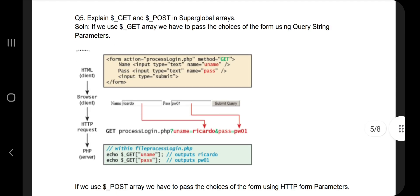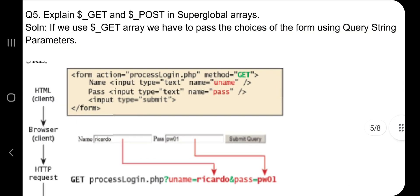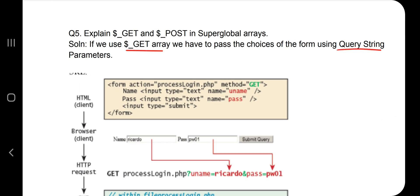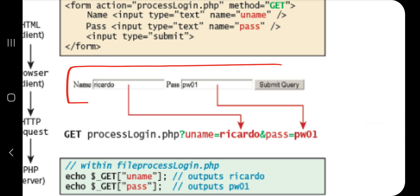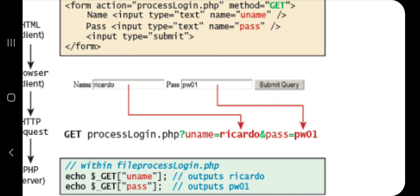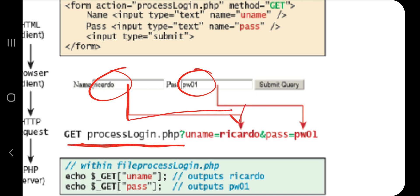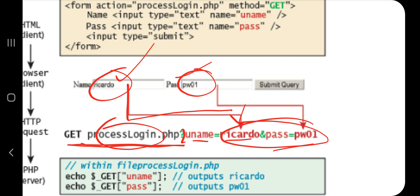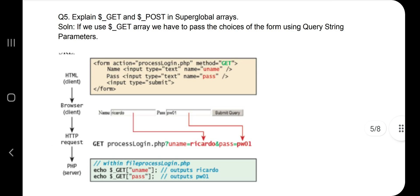The fifth question is about GET and POST superglobal arrays. A superglobal array is accessible to the whole code. GET uses query strings — when you submit a form, the name and password values appear in the URL after a question mark, like name=value&password=value. This is because the data is passed along with the URL link itself, which is called GET.